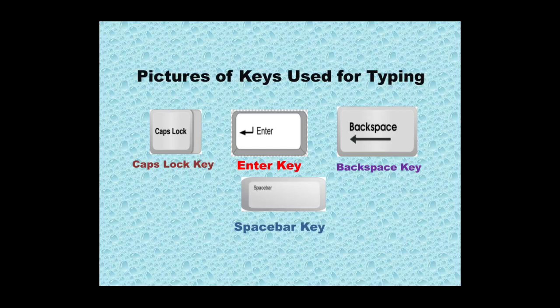So these are the pictures of the keys used for typing. Again let us revise: Caps Lock key, Enter key, Backspace key, and Space Bar key. You already know these keys and their functions, so try to remember where these keys are present on the keyboard - ke kahaan pe ye keys hain keyboard ke upar, aapko inki location ka pata hona chahiye.